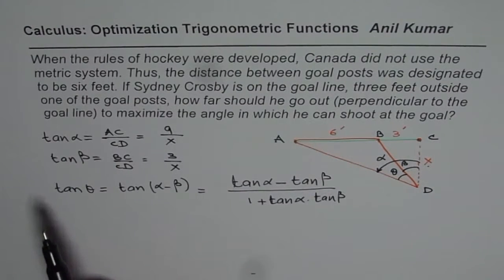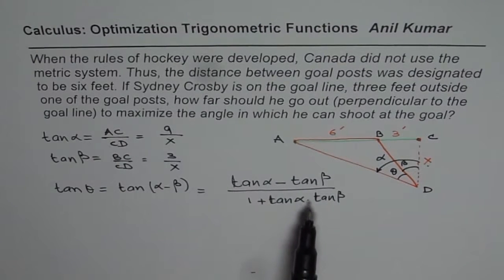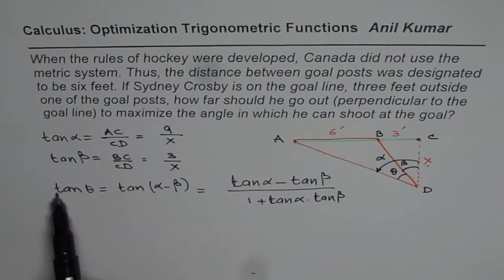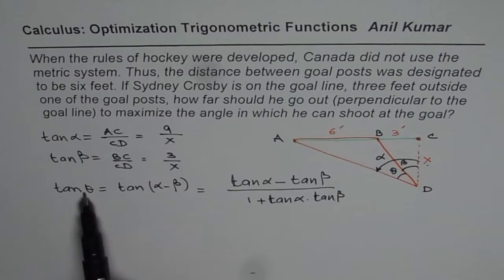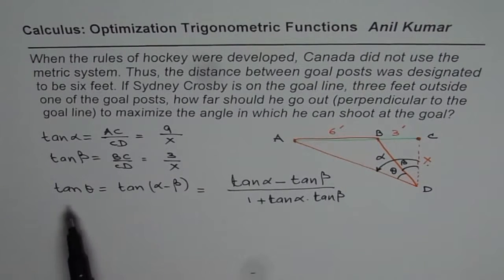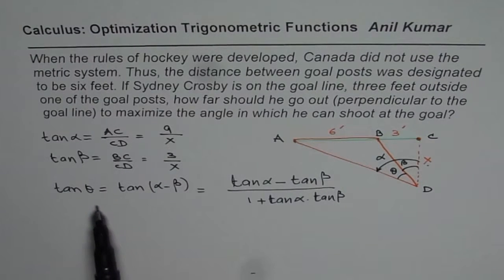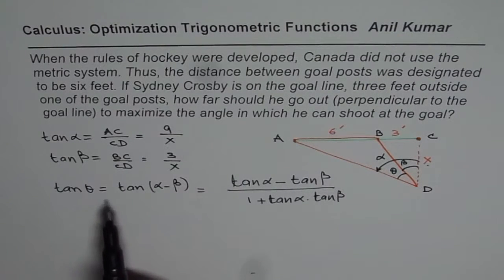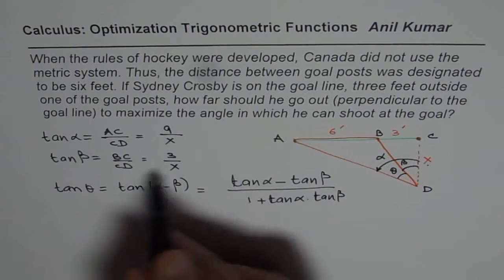Then you can differentiate both sides with respect to x. So when you differentiate both sides with respect to x, you get dθ/dx. And secant square theta is a derivative of tan theta. And that derivative of tan theta has to be maximized. That means you are finding the critical value. So then you equate dθ/dx to 0.